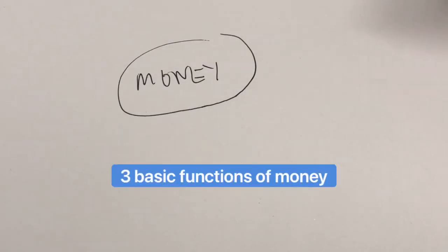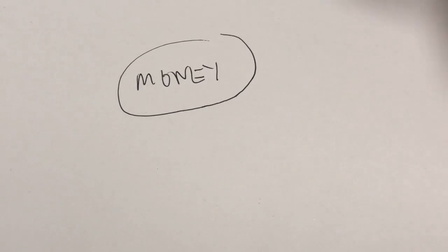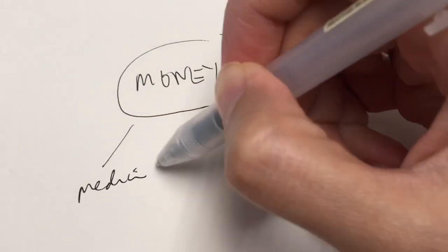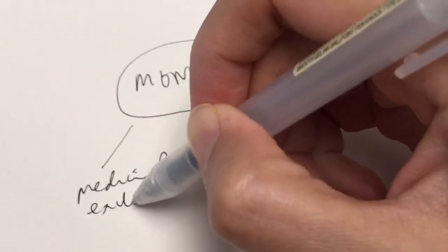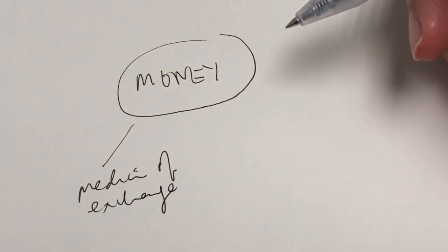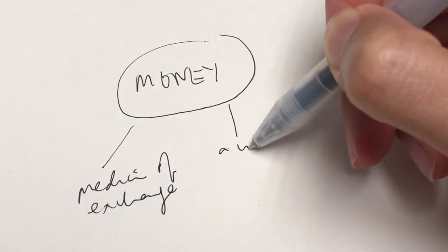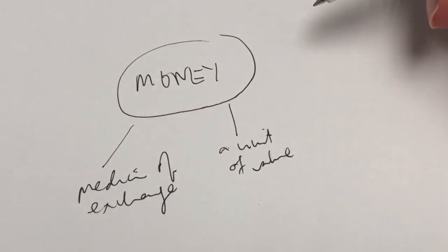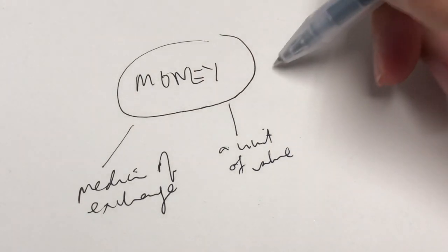Let's move on to the three basic functions of money. First of all, money as a medium of exchange. Secondly, money as a unit of value. And thirdly, money as a store of value.